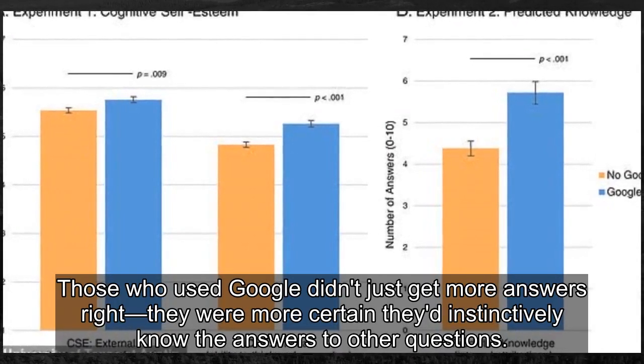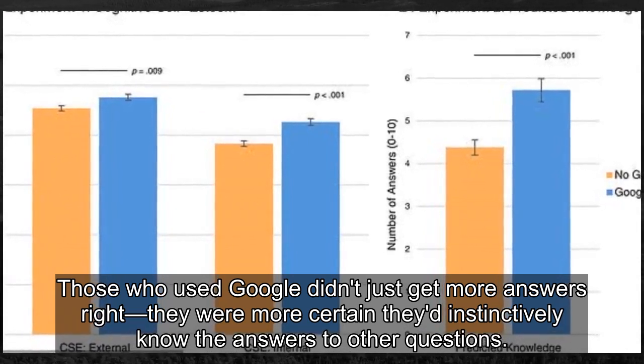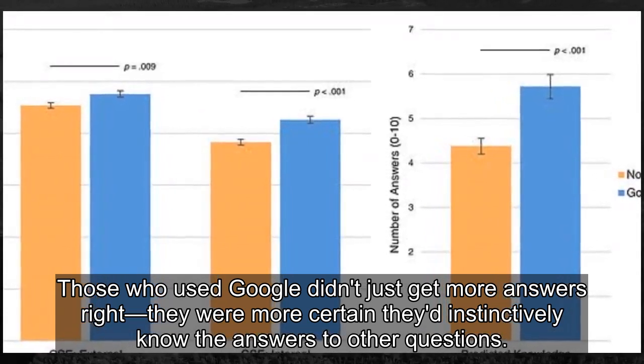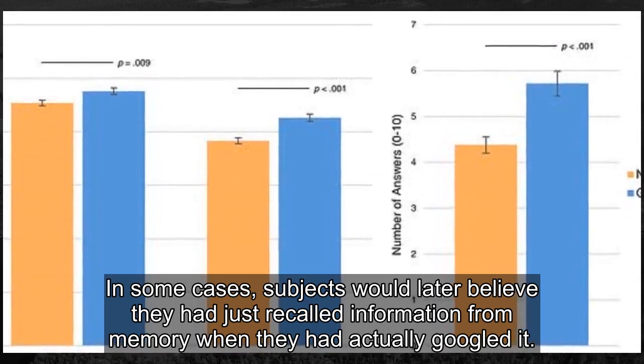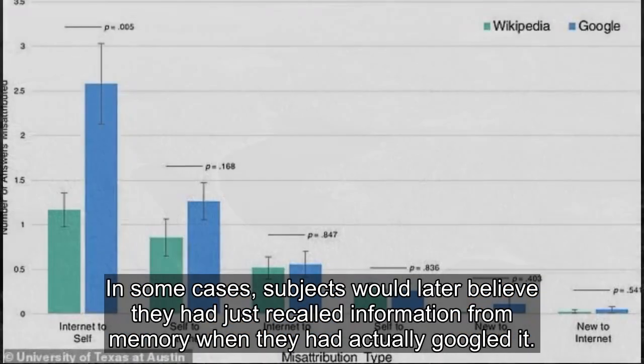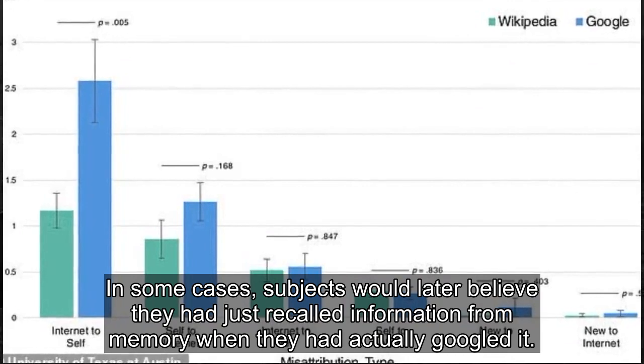Those who used Google didn't just get more answers right—they were more certain that they instinctively know the answers to other questions. In some cases, subjects would later believe they had just recalled information from memory when they had actually Googled it.